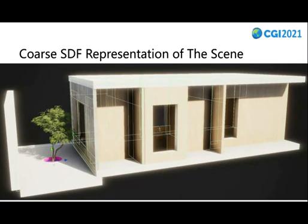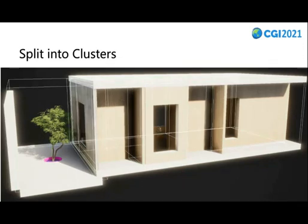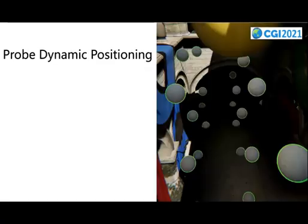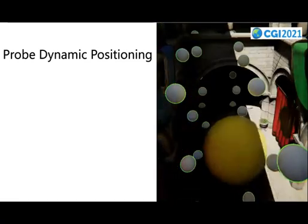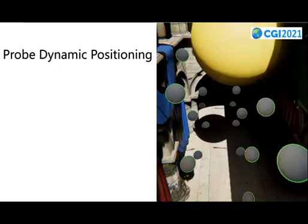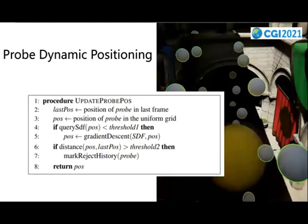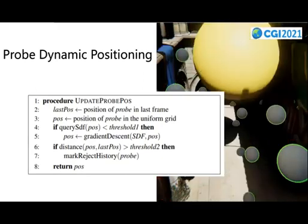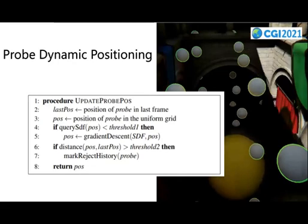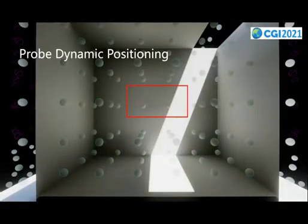Our scene is represented by many STF primitives. We split and pack them into clusters using k-means. After that, we get a signed distance field of our scene geometry, which can be used to query distance quickly. Using the SDF, we can position probes dynamically to get a better location distribution. Intuitively, a probe falling inside an object will provide invalid information, so we push it out using a gradient descent method. For probes that are far away from any surface in the scene, we turn them off temporarily until any object enters their range again.